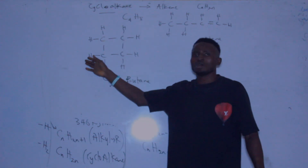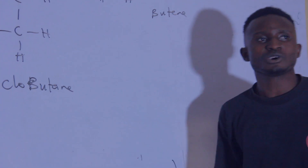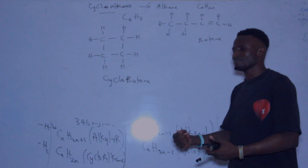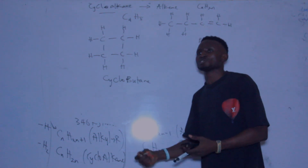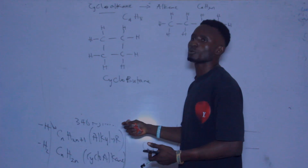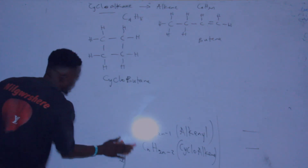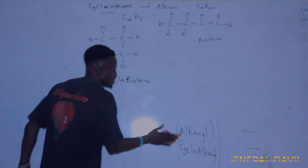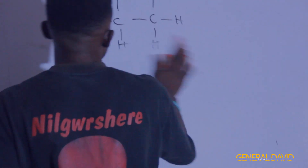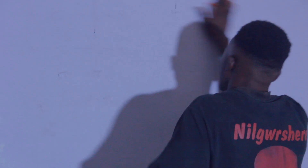Cycloalkane has the same general formula as alkene, which is CₙH₂ₙ. And cycloalkyne has the same general formula as alkyne. In the next class, I'm going to explain organic reactions. There are many organic reactions, and I will list some for you to work on.